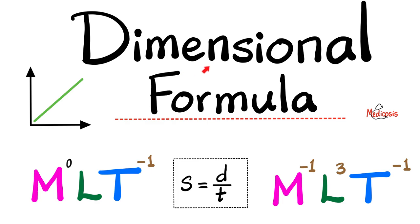Today we'll talk about a very important topic which is dimensional formula, or how to turn almost any measuring unit in physics into MLT units. The M stands for mass, L for length, and T for time. Click the like button, click the subscribe button, and let's get started.